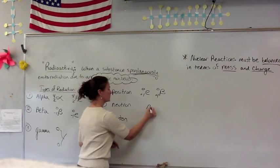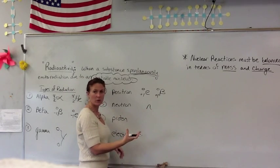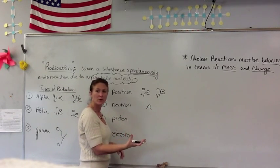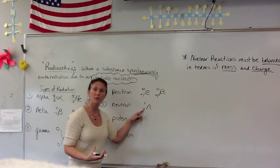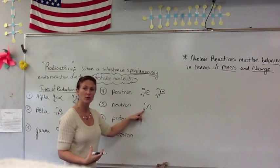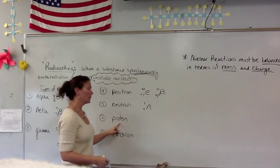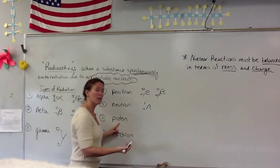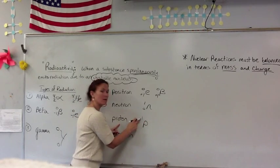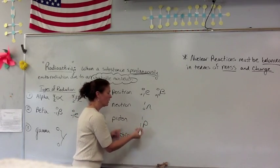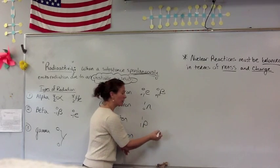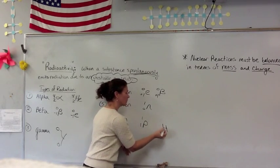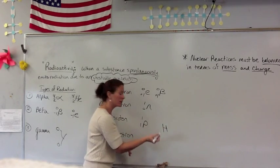A neutron, symbolized as N, has a mass of one and a charge of zero because it's neutral in charge. A proton is many times symbolized with a P, with a mass of one and a charge of one. Many times you're going to see a proton symbolized as just a hydrogen nucleus, because that's all a proton is.